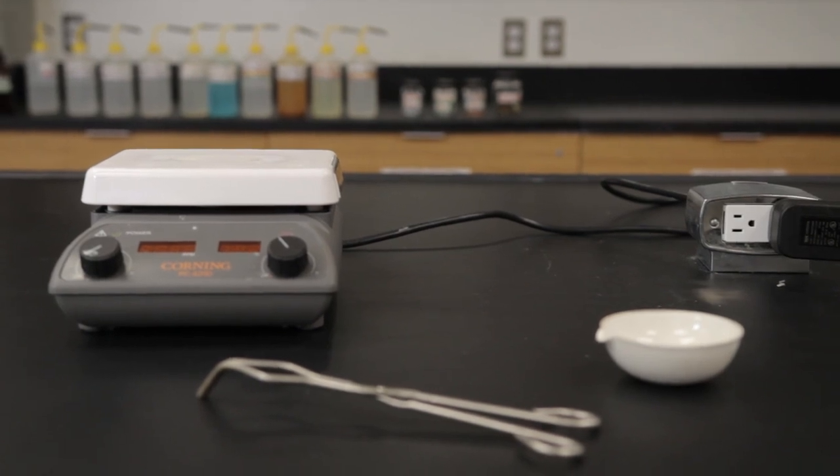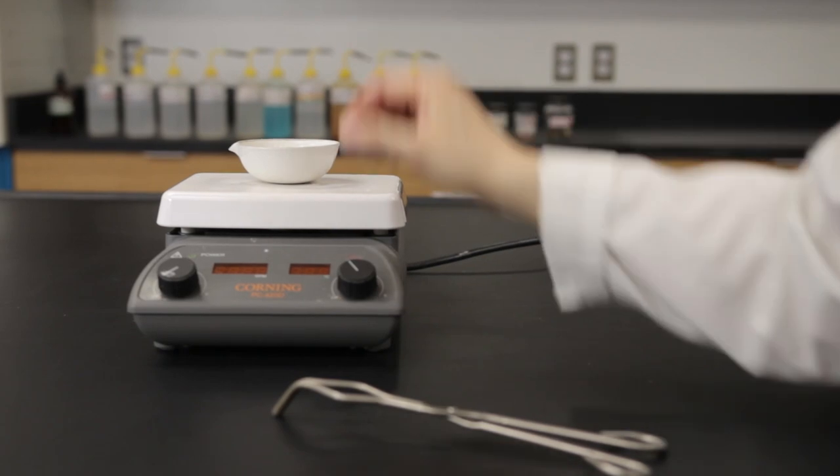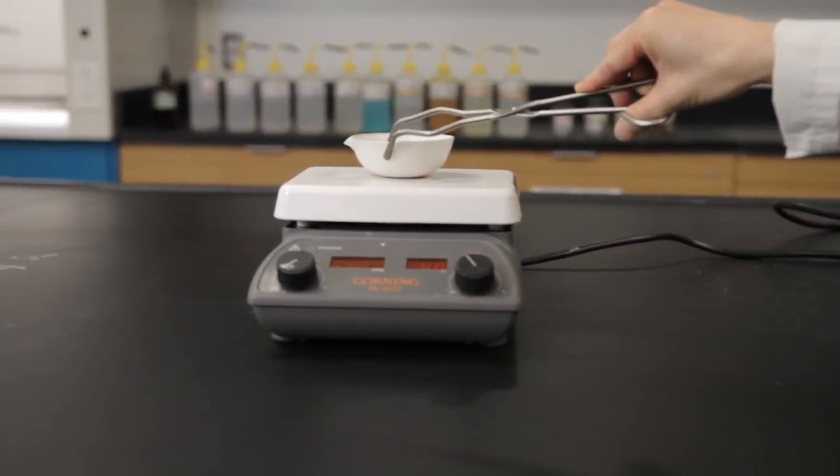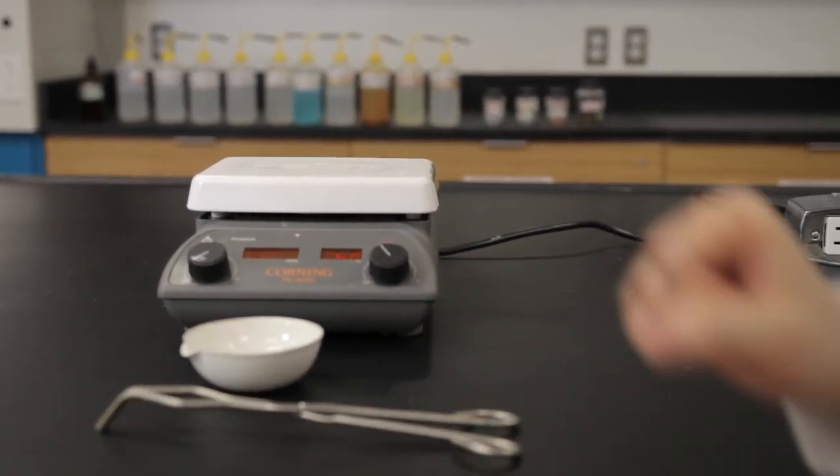Wash an evaporating dish with soap and water. Rinse it with distilled water and dry it. Heat the evaporating dish on high heat on a hot plate for five to ten minutes to remove any trace of moisture. Remove the dish using crucible tongs and allow it to cool to room temperature.